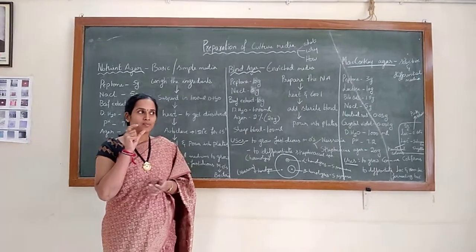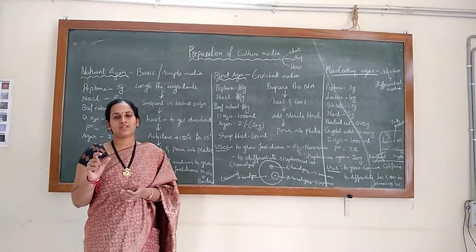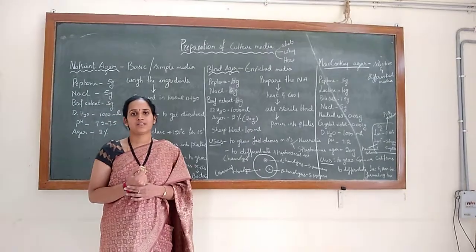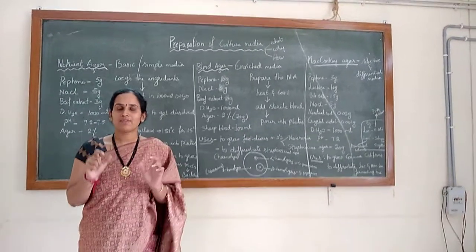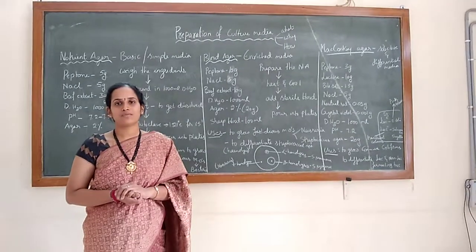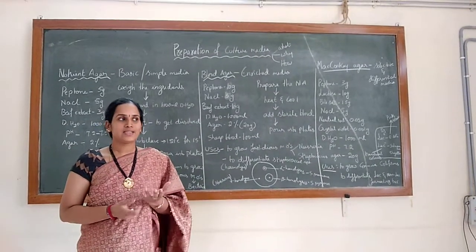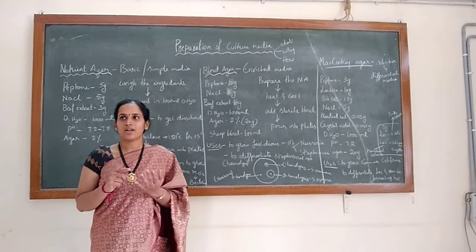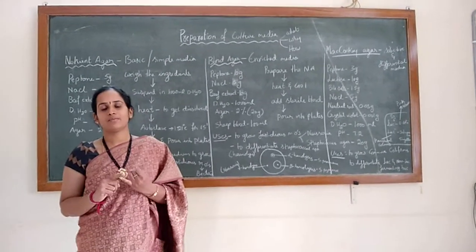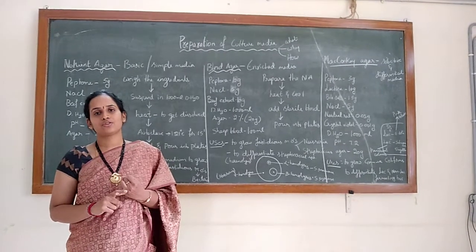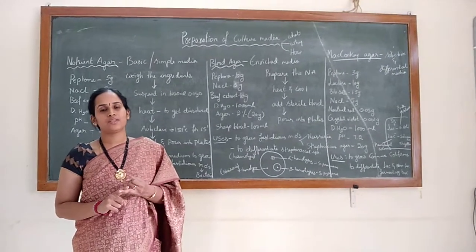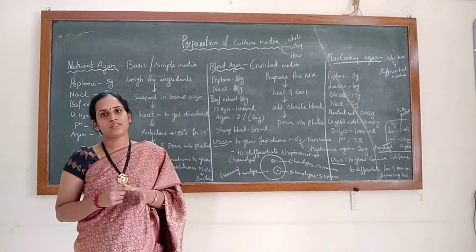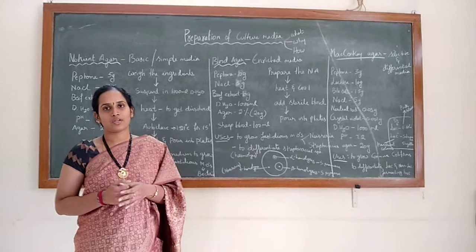We should prepare an ideal culture media which supports the growth of microorganisms. An ideal culture media must have the nutrients required for growth — basically a source of nitrogen, a source of carbon, mineral salts, and growth factors, along with distilled water.